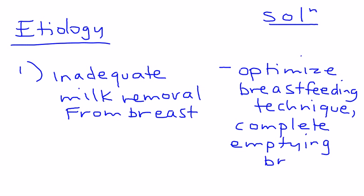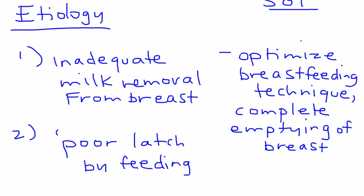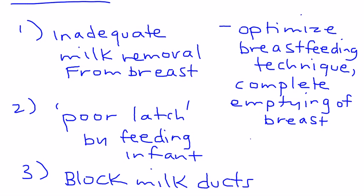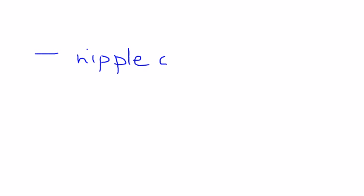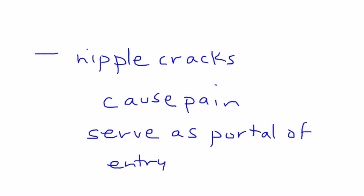Another reason why mastitis can occur is when the infant is not able to latch on properly to the breast — that's known as a poor latch by the feeding infant. One other reason is that the milk ducts can sometimes become blocked. All of these issues can, over time, lead to small nipple cracks.